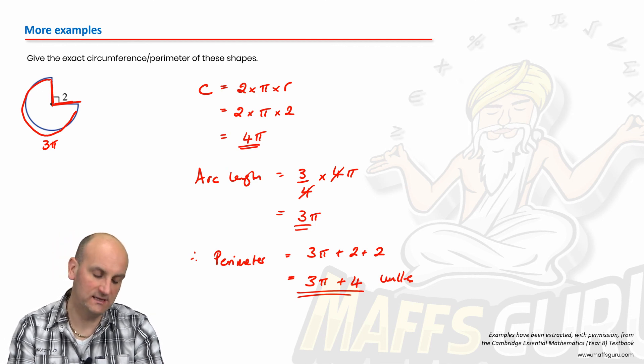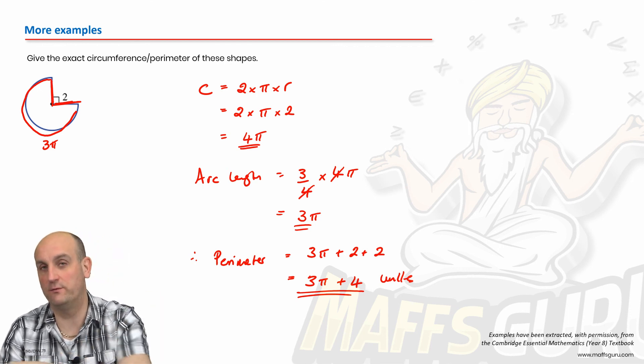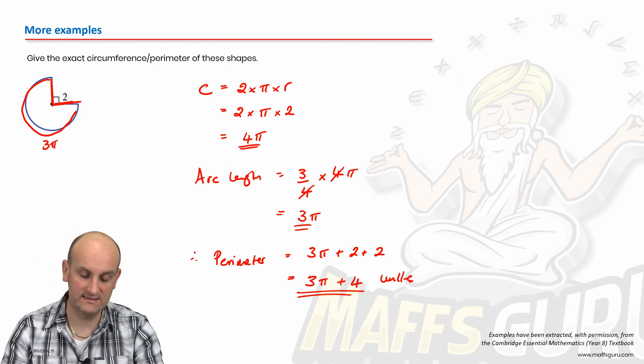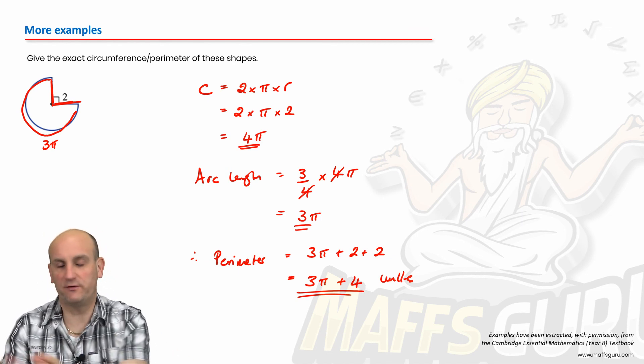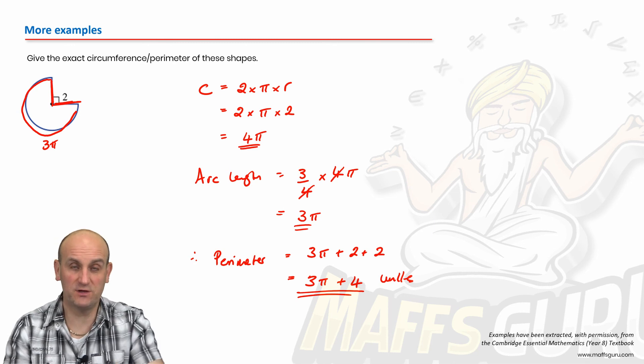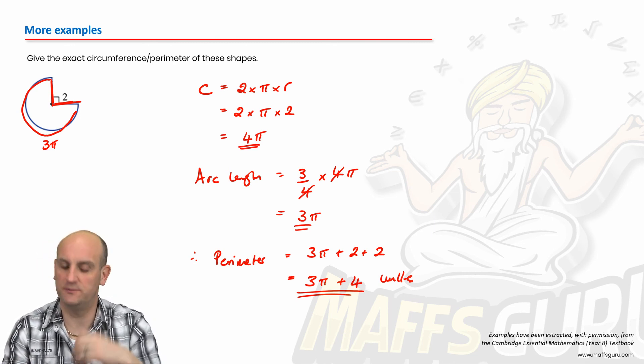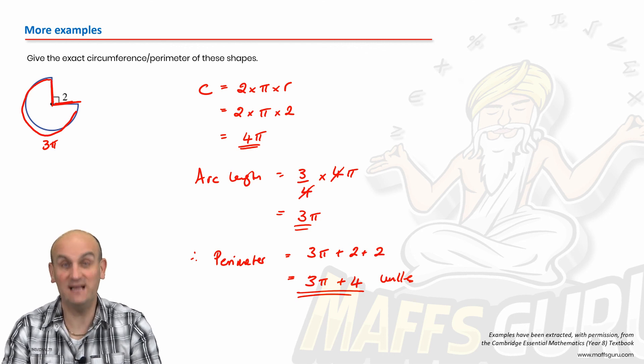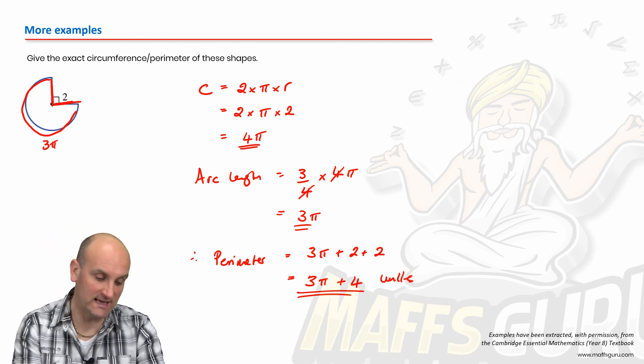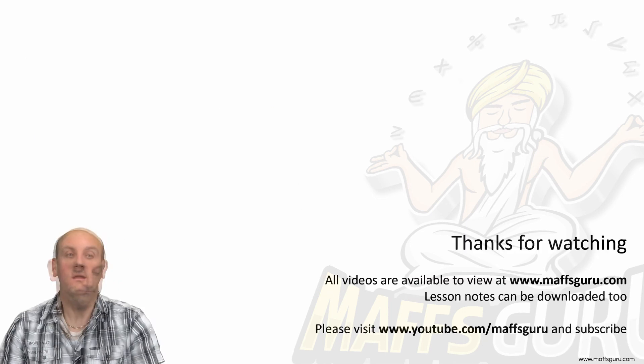Now, a lot of people make silly mistakes here, because they go 3 pi plus 4 must be 7 pi. It really isn't. 3 pi's plus 4 cannot be simplified. If it was 3 pi plus 4 pi, it can be simplified. But in this situation, it just stays as it is. And that's an exact value. It wants exactly. It doesn't want decimals.